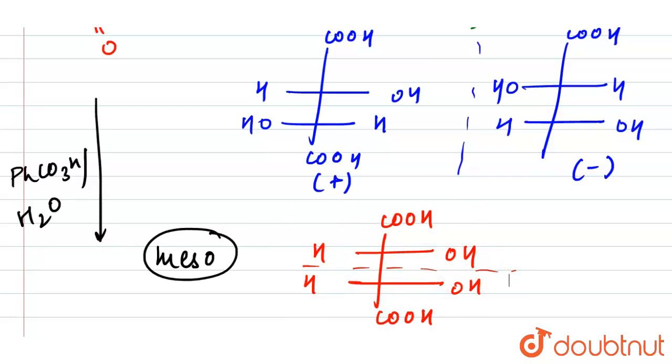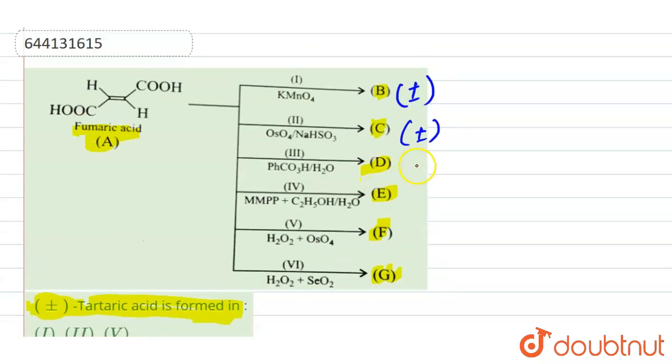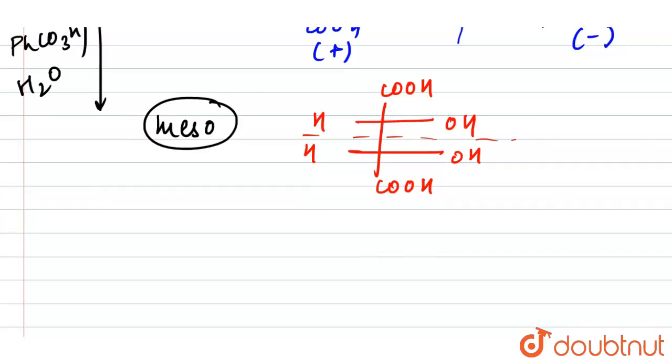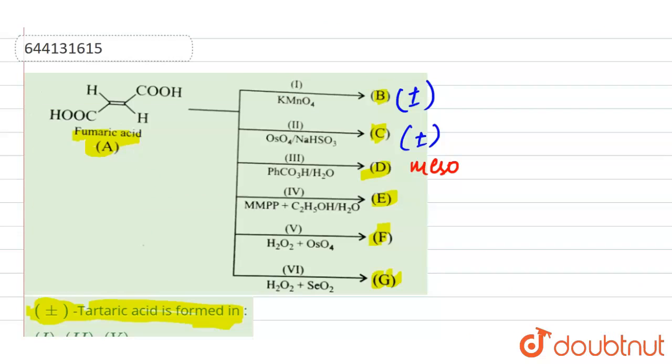So it means here in the third, we have the formation of meso. MMPP—here we are given MMPP. MMPP is magnesium monoperoxyphthalate. So this is our MMPP. So here also we have the formation of the meso.